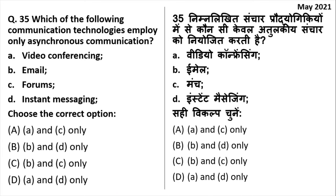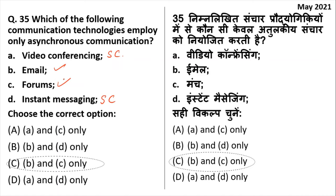Which of the following communication technologies employ only asynchronous communication? Asynchronous communication means people who are communicating are present at different space and time. Video conferencing is synchronous — people are present at the same time. Instant messaging is also synchronous. Email and forums are asynchronous communication — people are present at different times. The answer is email and forums — B and C.